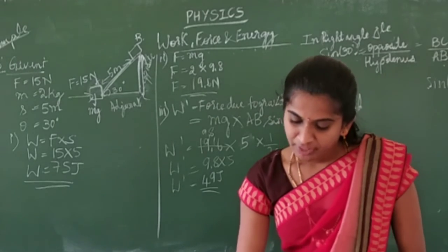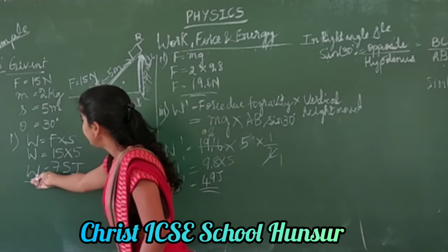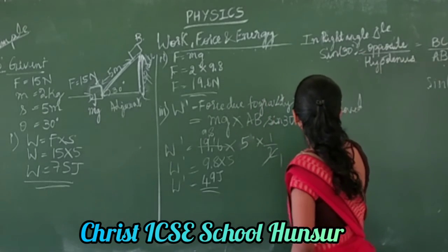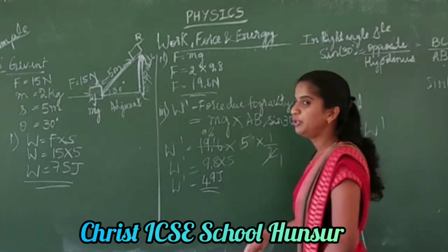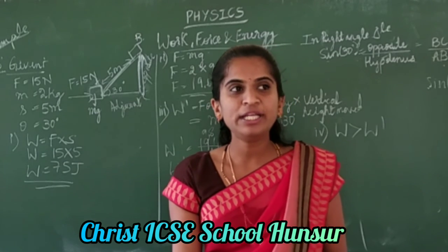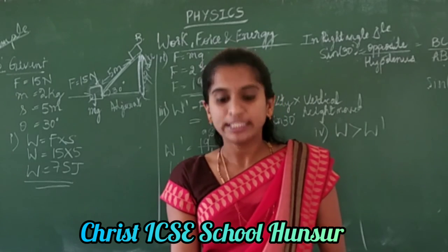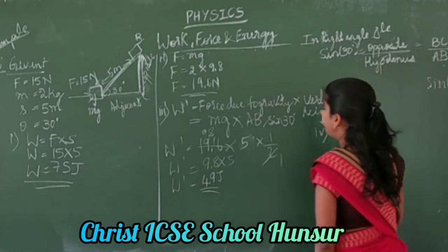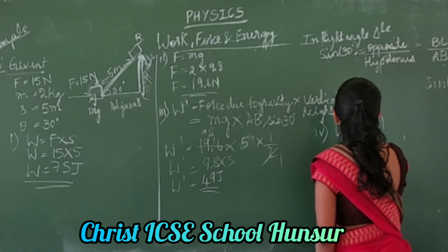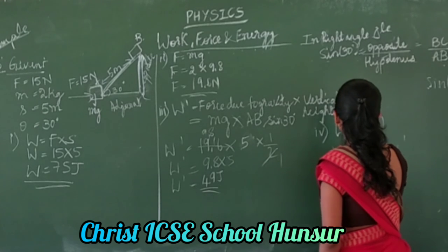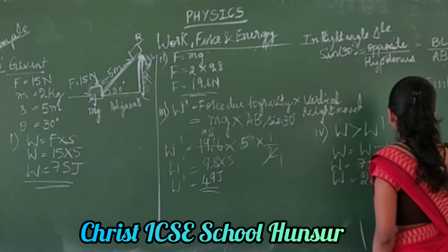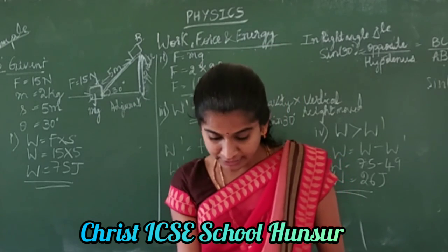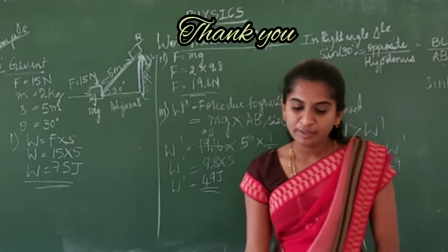We note that the work done by the applied force W is greater than the work done against gravity W dash: W greater than W dash. To find the difference, W minus W dash equals 75 minus 49 equals 26 Joules. The difference of 26 Joules is the work done against the force of friction between the body and the inclined plane.